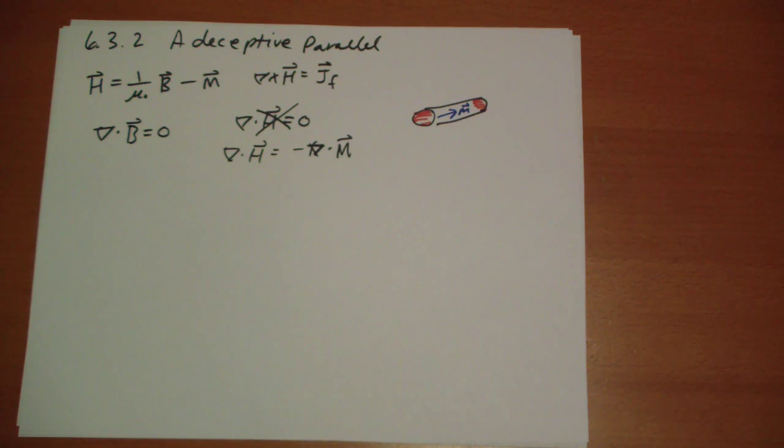So I hope this helps. I hope this helps you understand what's going on with the H vector, and you don't fall in the same trap that you could have fallen in, if you've forgotten that the H field is not the B field.